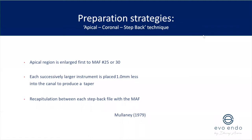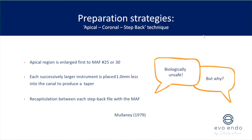By knowing your file sizes and tip diameters you can work out the shapes you're preparing — for instance, that step-back sequence creates an 0.05 taper. You'd recapitulate between each step-back file with the master apical file. However, I'd say this is biologically unsafe. Why? The majority of bacteria is found in the coronal pulp chamber and coronally within the root canals — before irrigating all of that away, you're taking files further and further down, pushing bacteria apically. Get rid of the bacteria coronally first before going deeper.